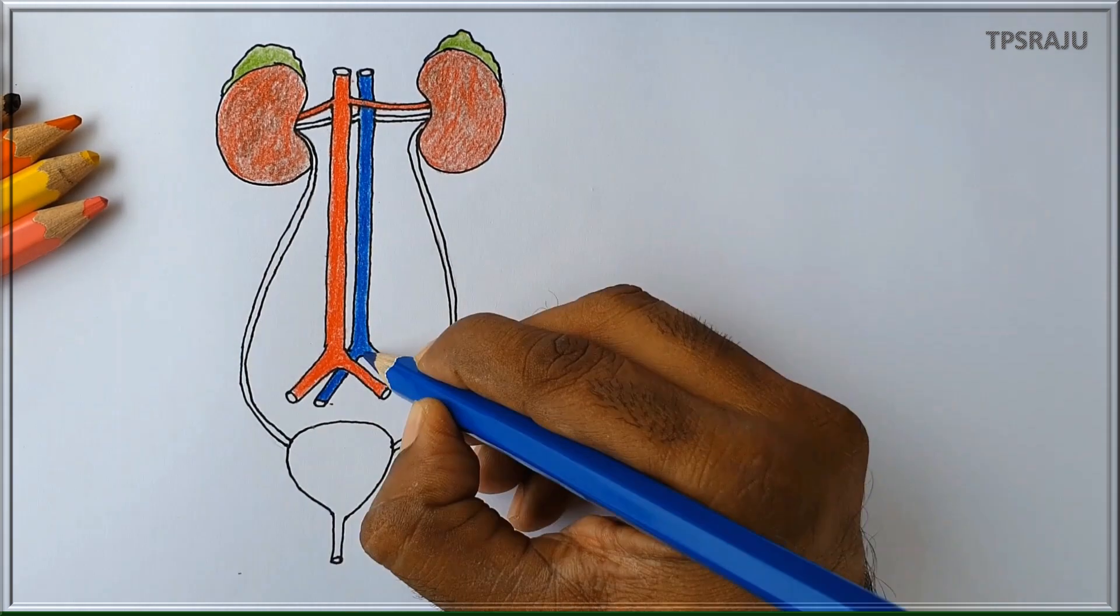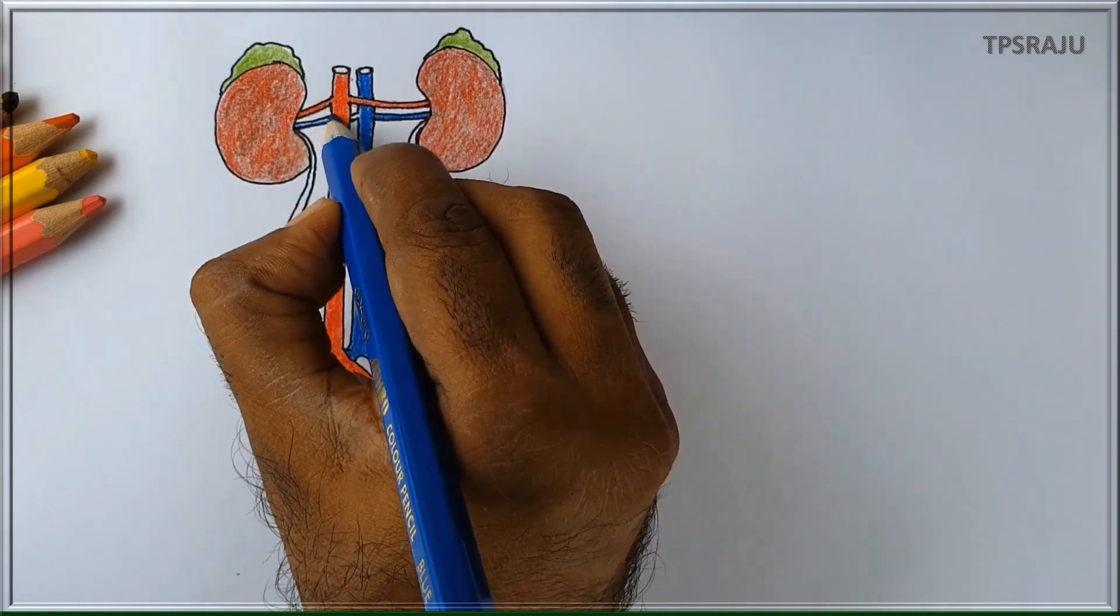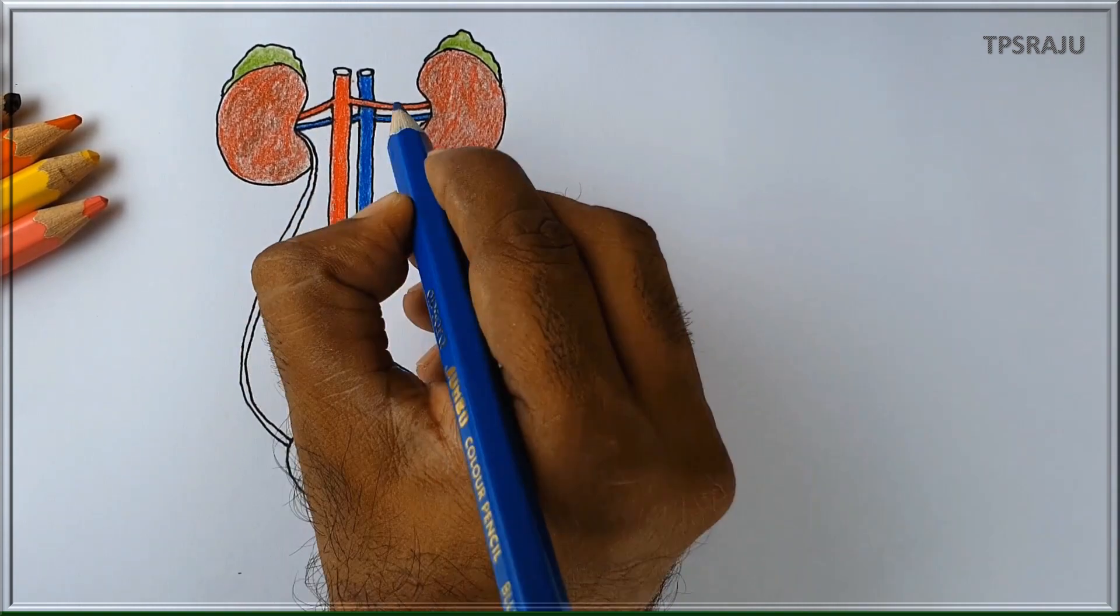Applying blue color to inferior vena cava. These are renal veins.